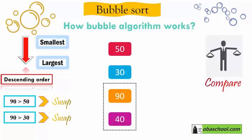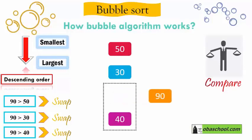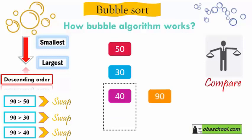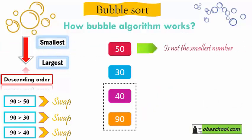The bubble sort now looks at the last two numbers: 90 and 40. 90 is bigger than 40, so we swap — 90 goes down and 40 goes up.